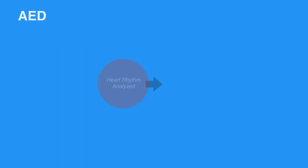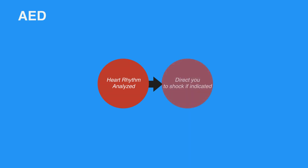Once the rhythm is analyzed, the device will direct you to shock the individual if a shock is indicated. A shock depolarizes all heart muscle cells at once, attempting to organize its electrical activity. In other words, the shock is intended to reset the heart's abnormal electrical activity into a normal rhythm.